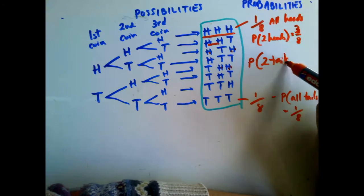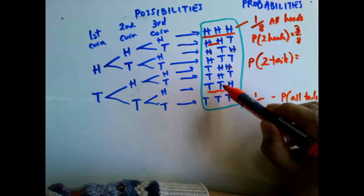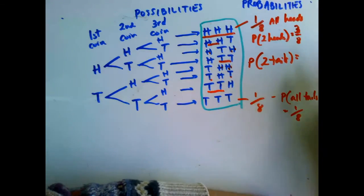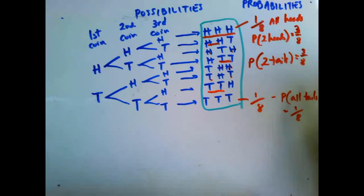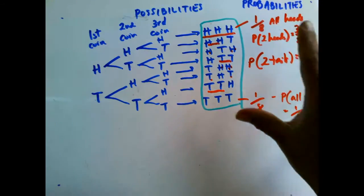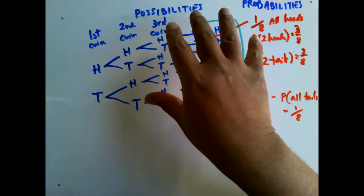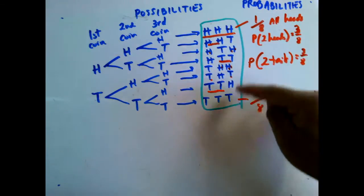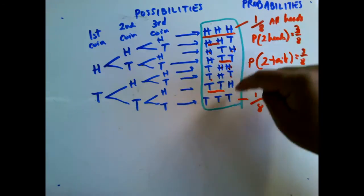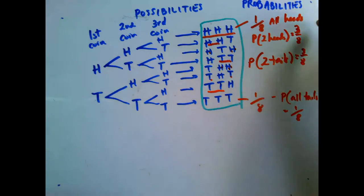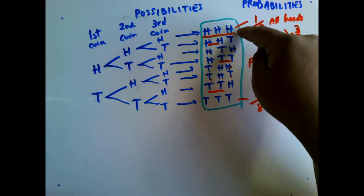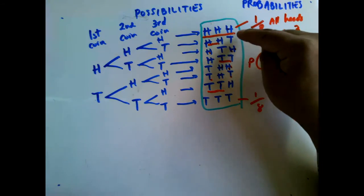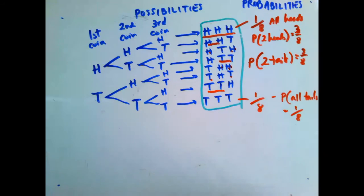The probability of two tails is also three out of eight. So here we get an idea of the difference between possibilities and probabilities. When you say possibility, it's all the results that are possible. Probability is more specific — it's a part of the whole. We're going to talk more about this next time.